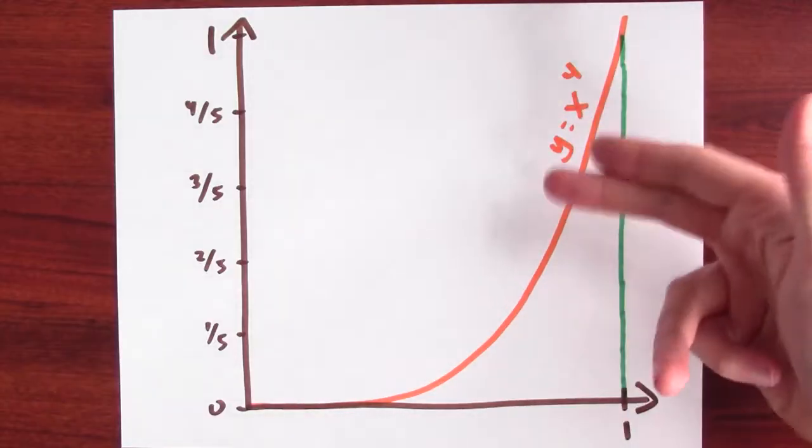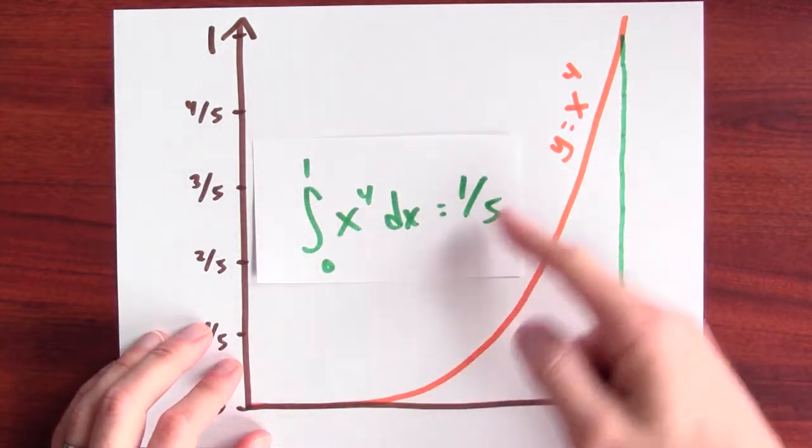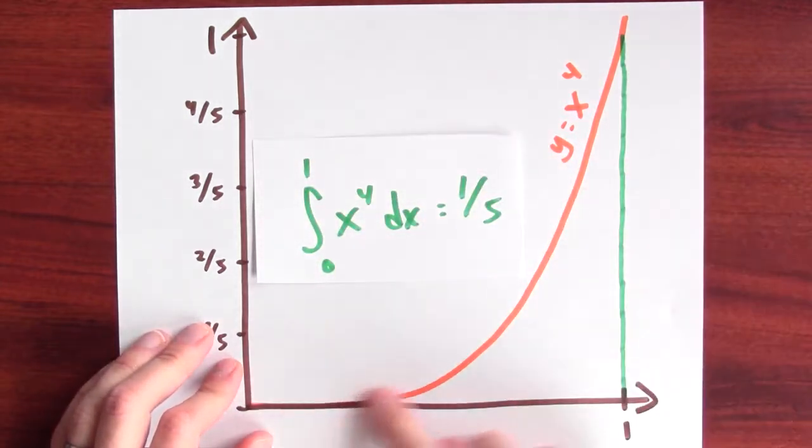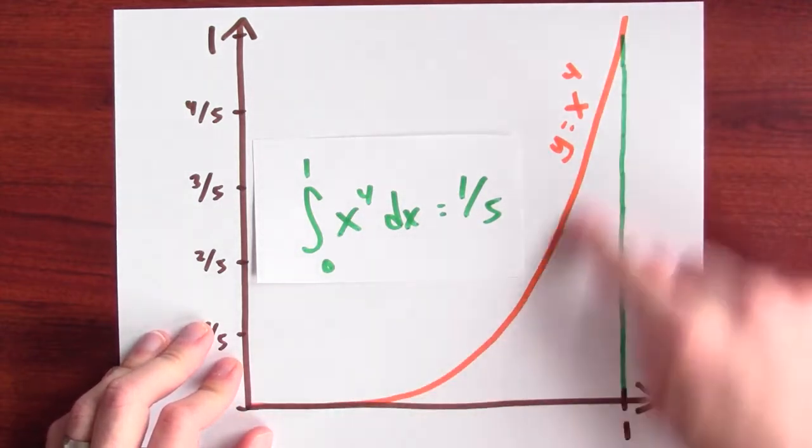I can really see this fact. So, here's a graph of the function y equals x to the 4th. And what we just saw is that the integral from 0 to 1 of x to the 4th dx is 1 5th. So, there must be 1 5th of a square unit of area underneath this graph.